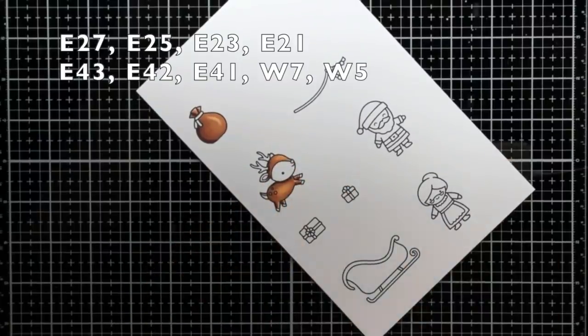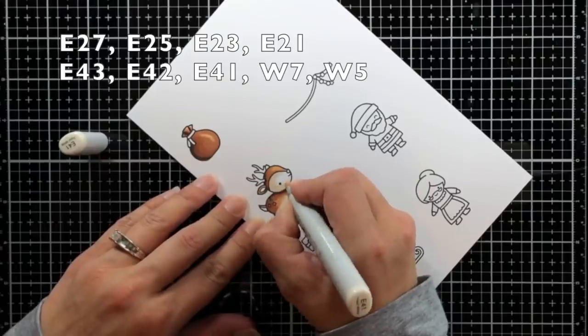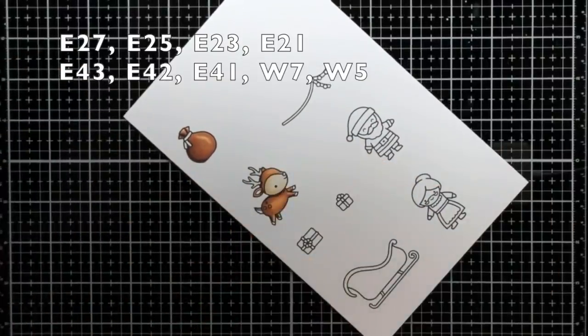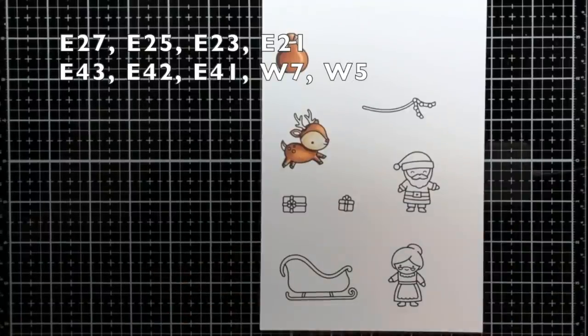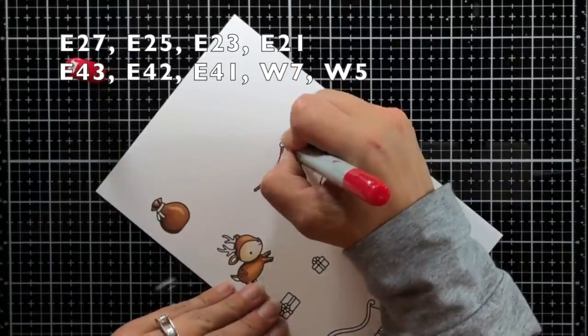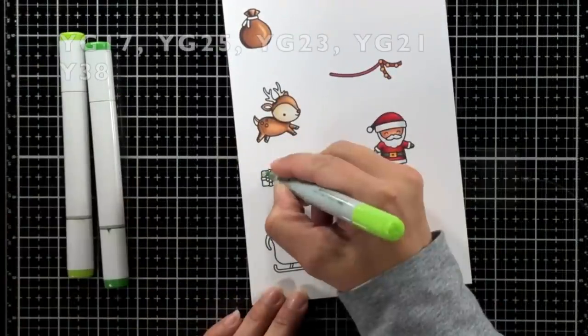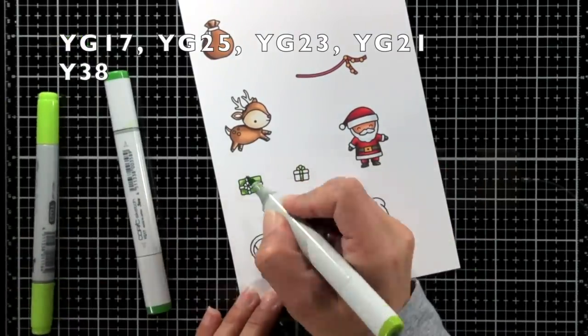I did try to use some of the same colors throughout, so for the present sack and the deer I used E27, 25, 23, and E21. On the face I did use E43, E42, and E41, and then a little bit of W5 and W7 for the hooves.